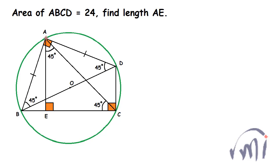Since angle ADB is 45 degrees, angle ACB will also be 45 degrees. Triangle AEC is a right angle triangle — if the right angle is 90 degrees and this angle is 45 degrees, the remaining angle must also be 45 degrees. So triangle AEC is a right isosceles triangle where side AE is equal to side EC.